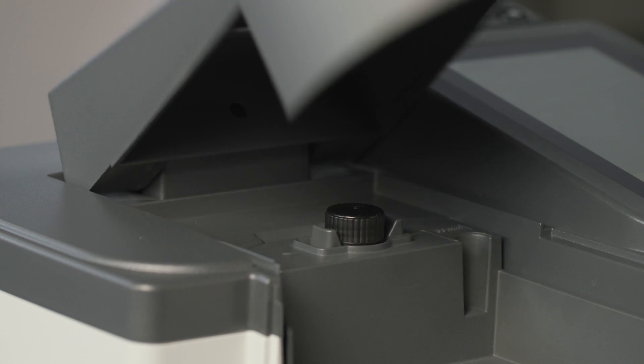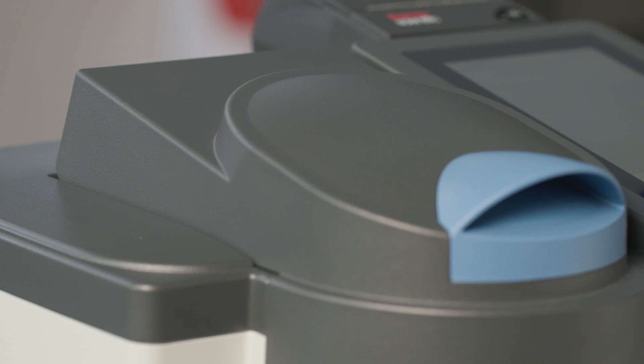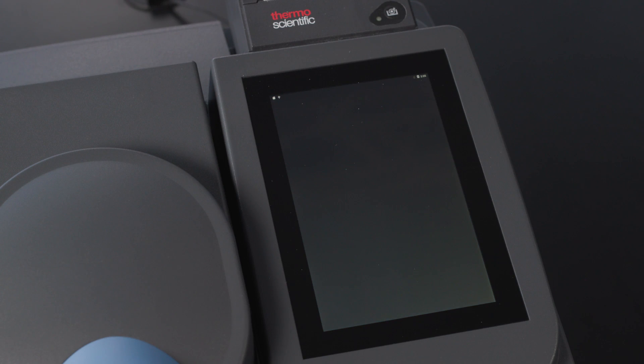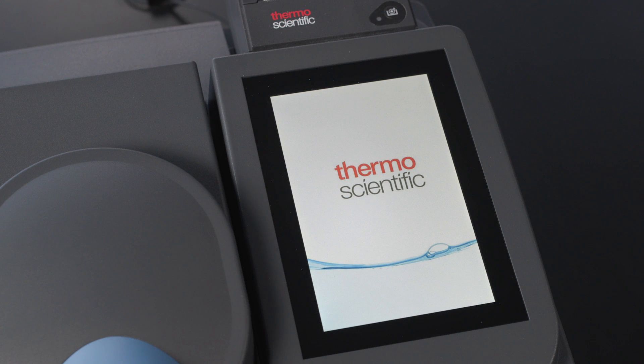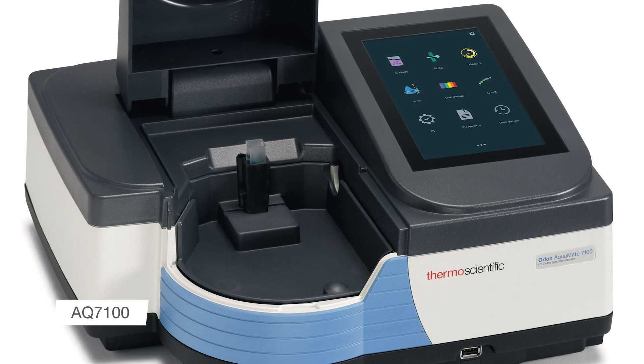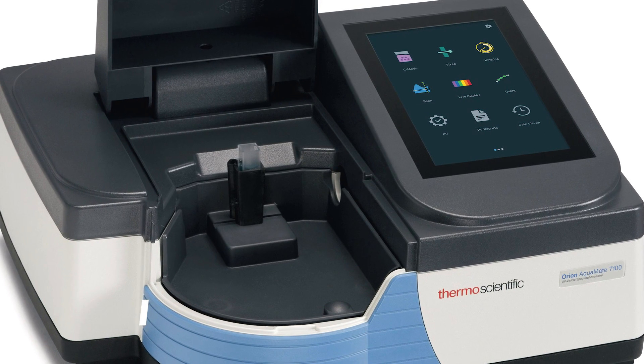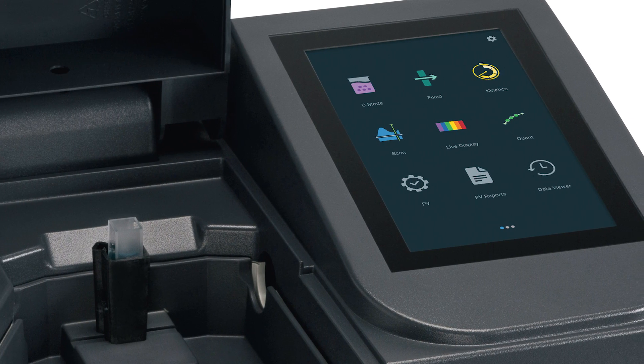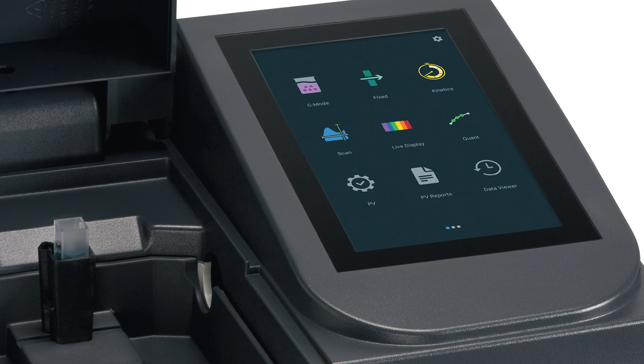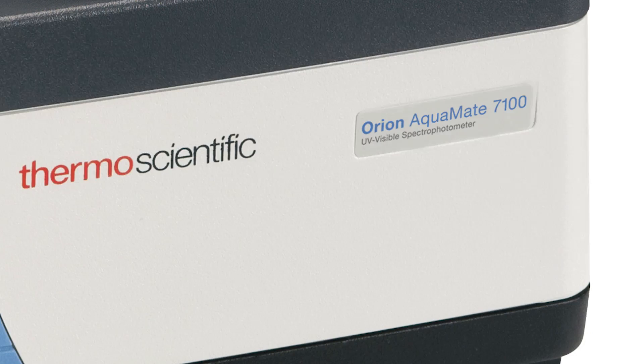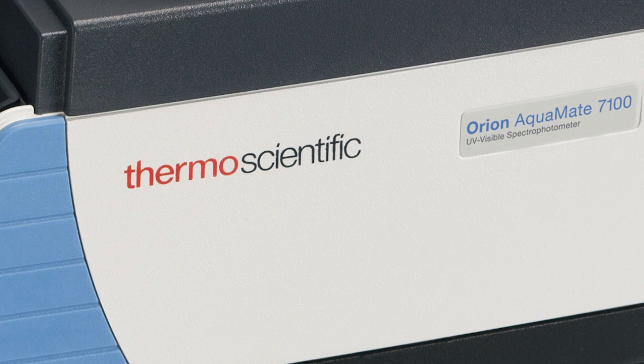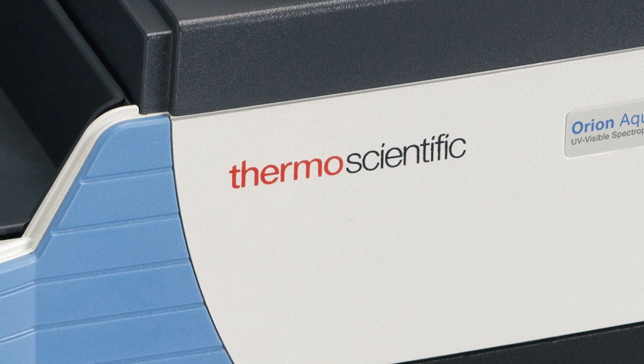The benefit of a xenon flash lamp is that it has a much longer life and doesn't require a warm-up time. If our laboratory uses a spectrophotometer infrequently, the AQ7100 visible light spectrophotometer may be a better value, but it's important to remember that the AQ7100 requires approximately 30 minutes to warm up, and the tungsten halogen lamp doesn't last as long as the xenon lamp in the AQ8100.